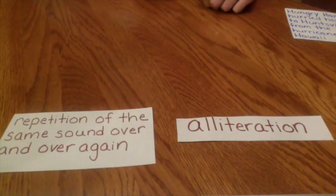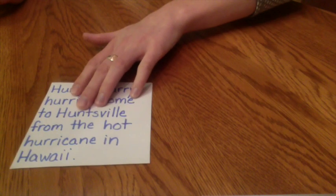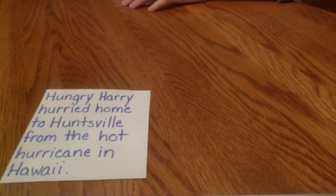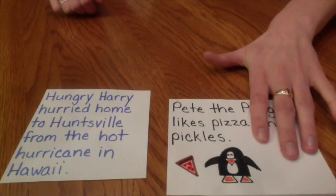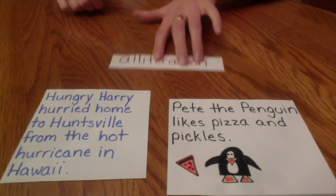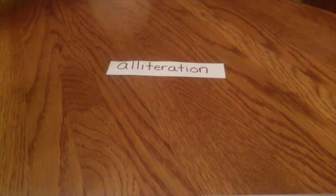Alliteration — these are our tongue twisters. It's the repetition of the same sound over and over again. Like Hungry Harry hurried home to Huntsville from the hot hurricane in Hawaii — it's tricky to say. Or Pete the Penguin likes pizza and pickles. The same sound is repeated over and over again. It's alliteration.